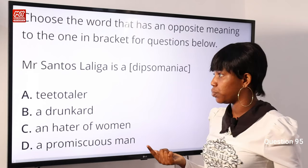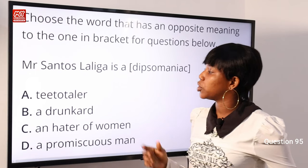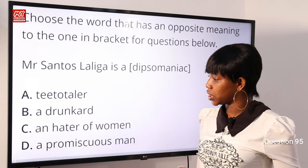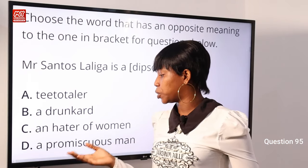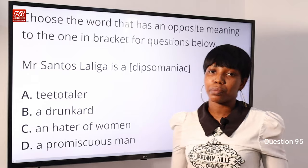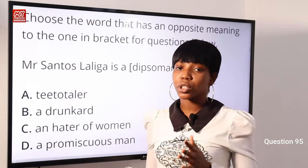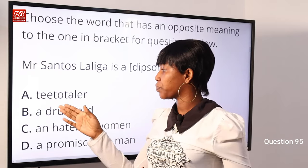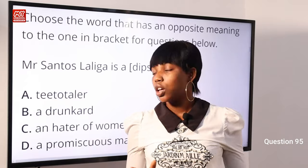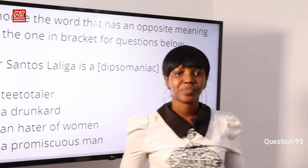Question 95: Choose the word that has an opposite meaning to the one in brackets. 'Mr. Santo Zaliga is a dipsomaniac.' Options: A) teetotaler, B) a drunkard, C) an eater of women, D) a promiscuous man. 'Dipsomaniac' means one who likes to take alcoholic beverages. The opposite is a teetotaler — one who never drinks alcohol. Option A) teetotaler is the correct answer.